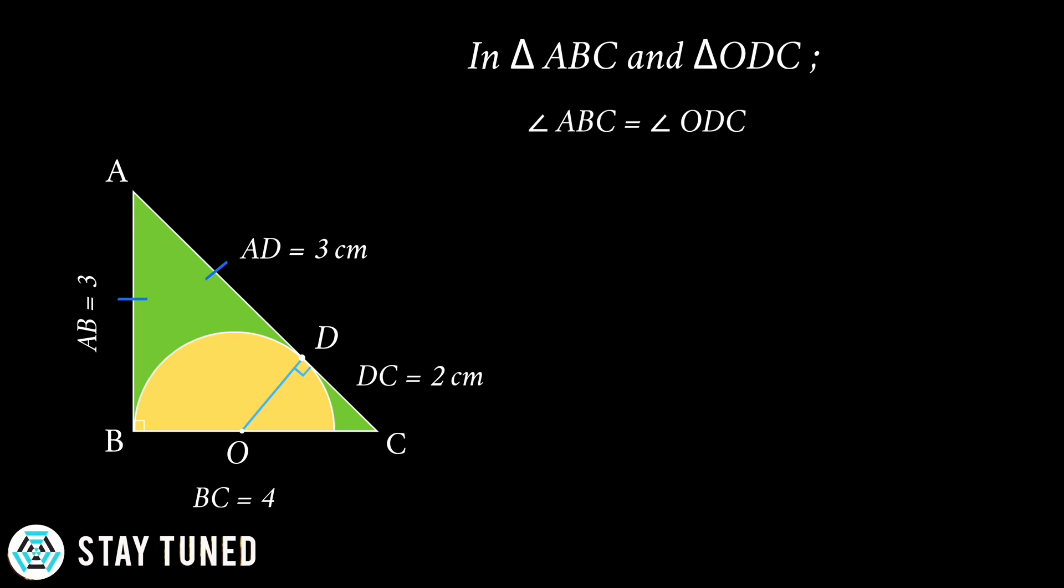we have angle ABC is equal to angle ODC since both are 90 degrees. Angle ACB is equal to angle OCD since it is common to both the triangles. Therefore, triangle ABC is similar to triangle ODC by double A criteria.